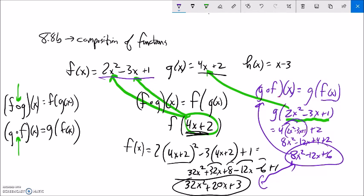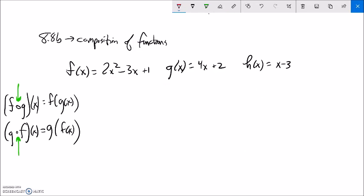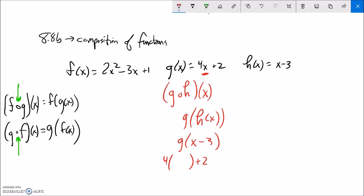I'll do a couple more examples. So let's go ahead and do g of h of x. Notice that would be g of h of x. So now I can go, that's g. What is h of x? It's x minus 3. So now this is g of x minus 3. So x minus 3 is going to get plugged into g. g is 4 times input plus 2. The input happens to be x minus 3. So simplify, distribute that. 4x minus 12 plus 2. That'll be 4x minus 10.